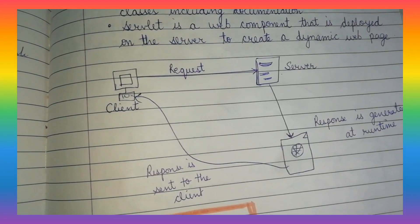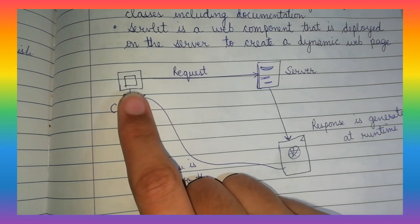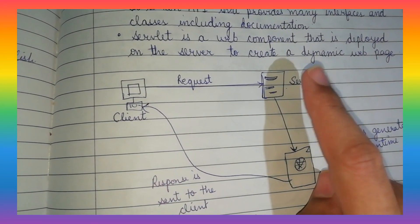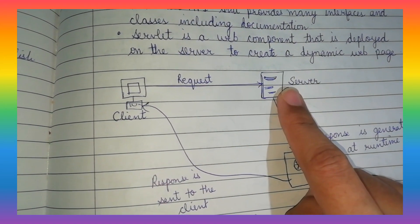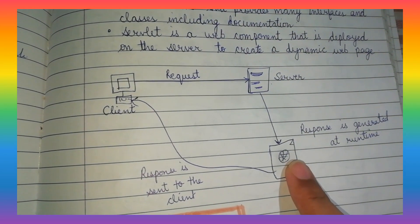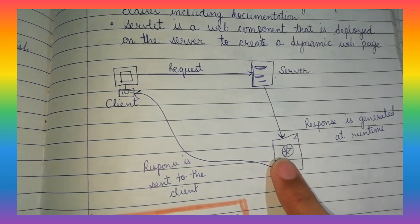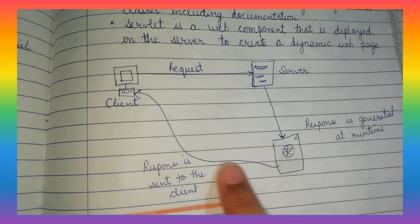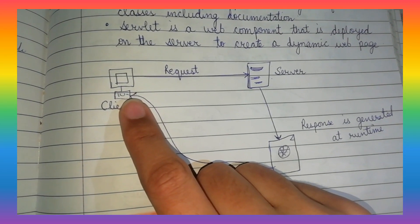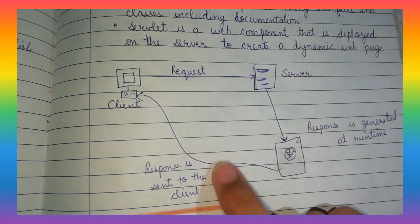Now let's discuss about the diagram of the servlet. Firstly, the client sends the request to the server and the server accepts that request, and a response is generated at the run time. After that, the response is sent to the client and the client accepts the same. After that, the same process continues.